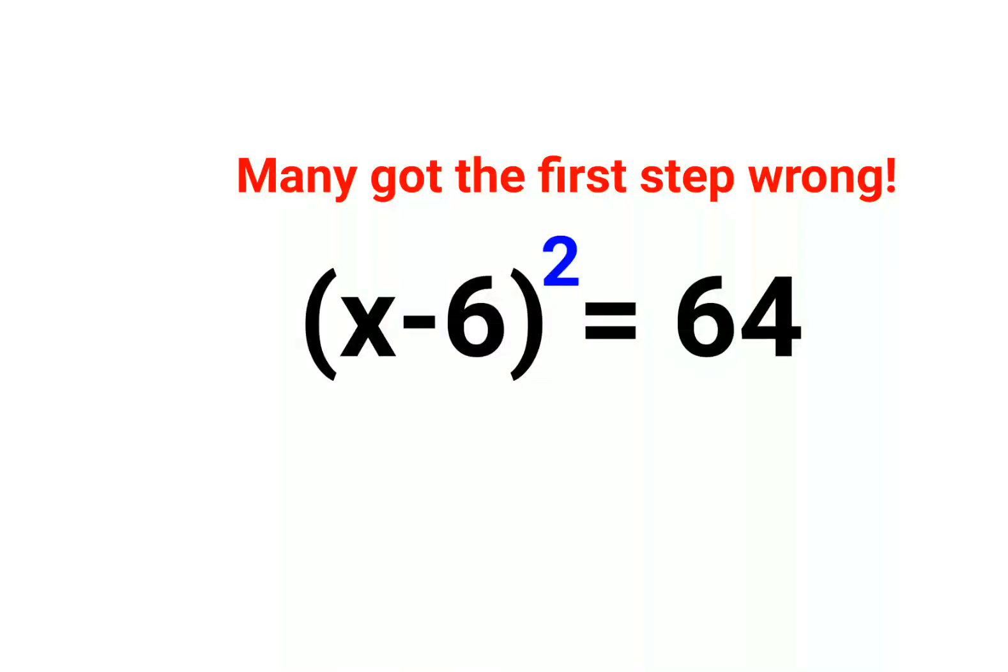Welcome everyone. So yes, literally everybody got the first step wrong. Many, many people could not get this correct. Okay, so here whenever you have a variable, let's say the variable was a and we have a² equals to 64.